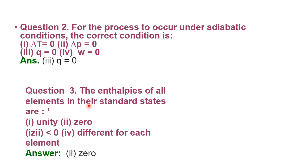Next: the enthalpies of all elements in the standard states are — unity, zero, less than zero, or different for each element? In the theory part of thermodynamics, all elements in their standard states — such as oxygen gas, solid carbon, liquid mercury — have a standard enthalpy of formation of zero, as there is no change involved in their formation. Therefore the correct choice is zero — choice number two.